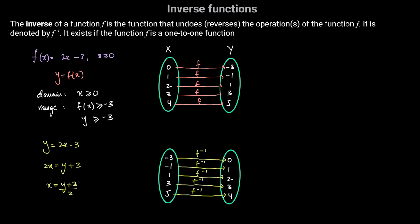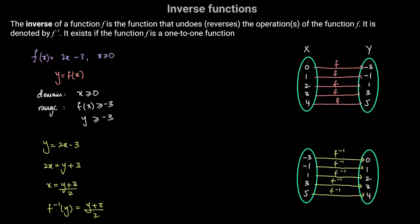For the inverse function, the output is x and the input is y. So f inverse in terms of y is (y plus 3) divided by 2. Since we want f inverse of x, we substitute x as the input instead of y, giving f inverse of x equals (x plus 3) divided by 2. This is the inverse function f inverse of x.